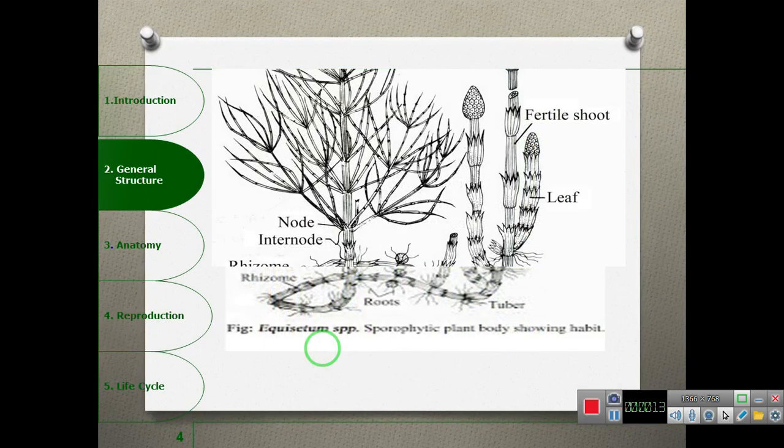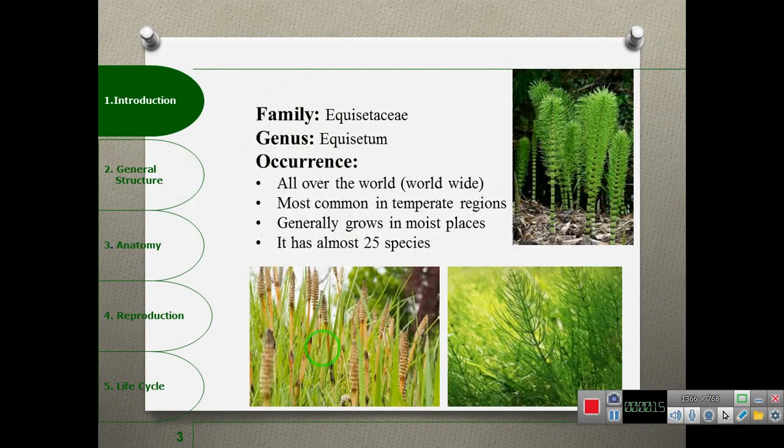We are learning about plant diversity. Our current topic is the Equisetum family, also called Equisetaceae. It is widely distributed worldwide and most common in temperate regions. It generally grows in moist places where organic matter and humus are present. It has almost 25 species.